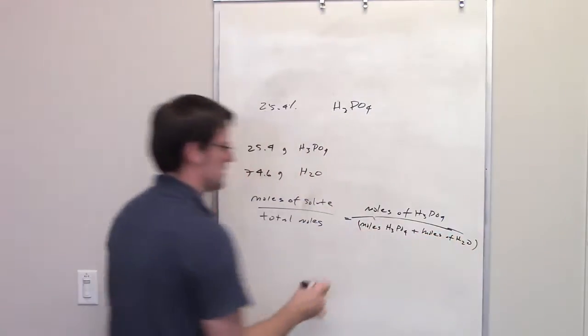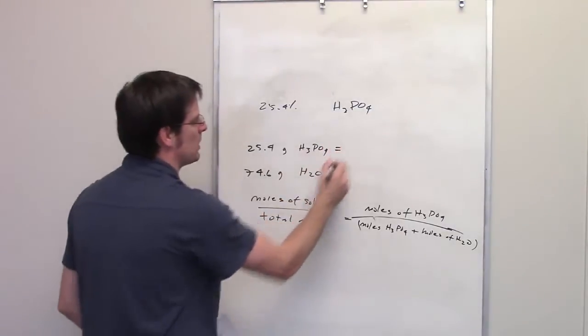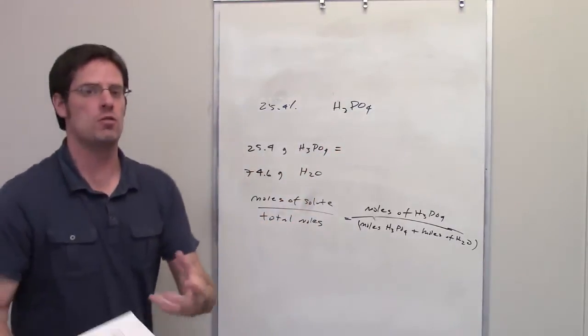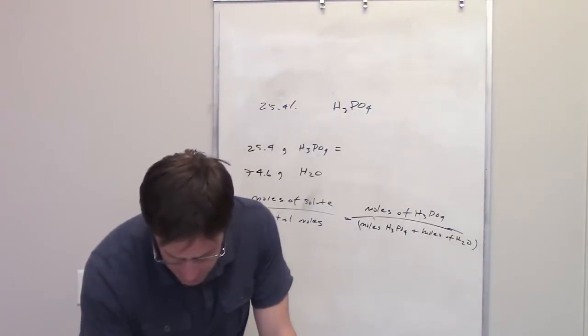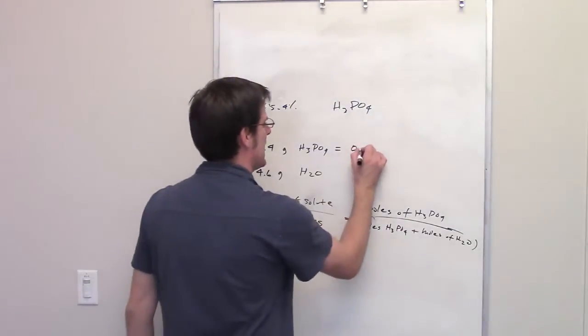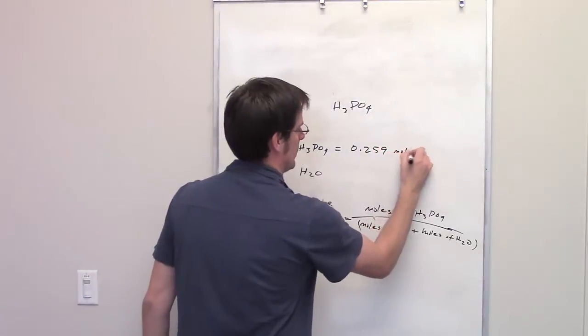Hopefully that makes sense, so here's what I do. We did determine in the previous problem the total number of moles that 25.4 grams of phosphoric acid is, and that came out to be 0.259 moles of phosphoric acid.